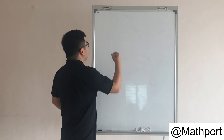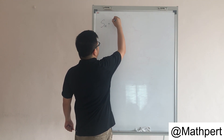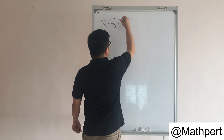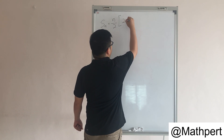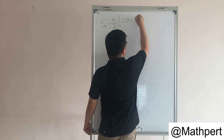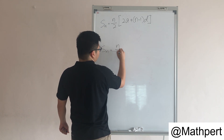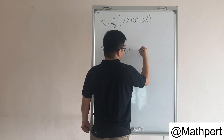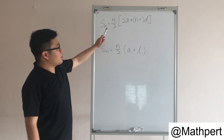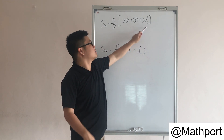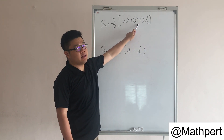First, I give you the formula for the sum of arithmetic progressions. Sn equals n over 2 multiplied by 2a plus n minus 1 times d. Another form is n over 2 times (a plus l). All these terms represent the same variables as before: a is the first term, d is the common difference, and n is the nth term.